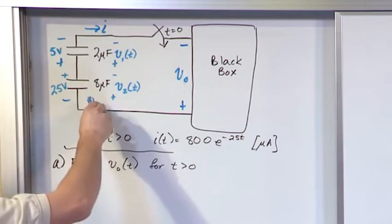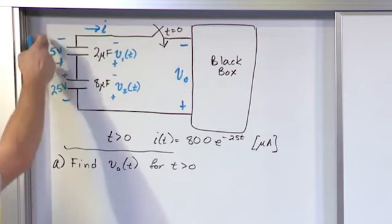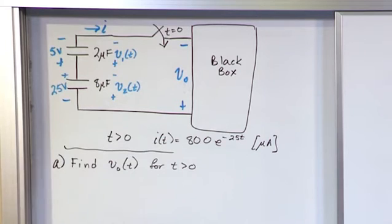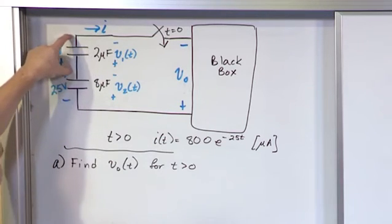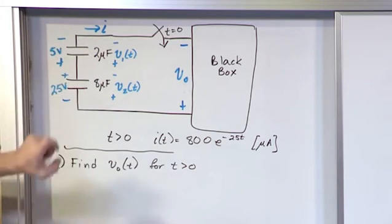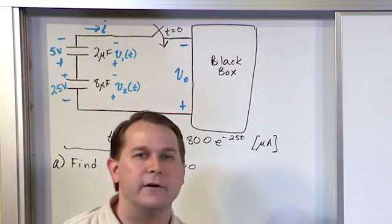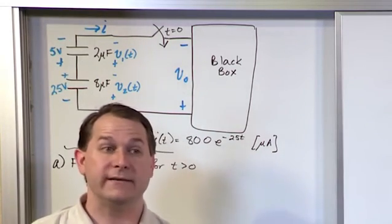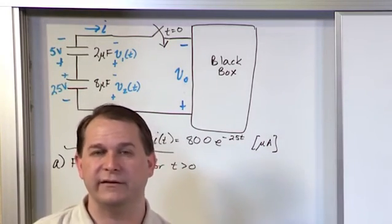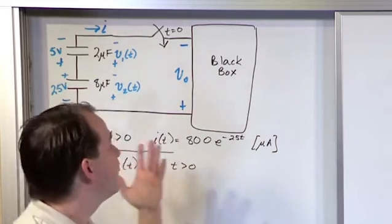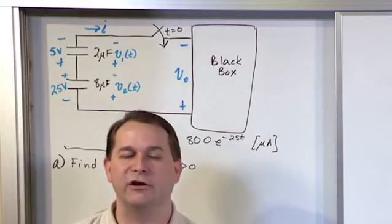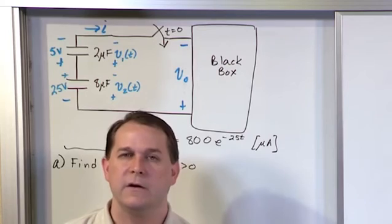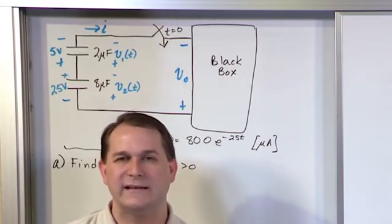...and we also know the current going through this capacitor, and the initial conditions, we could integrate and find V of t across each capacitor and add them together. That's fine. But you have to do two sets of integrations because to find the voltage across a capacitor, you have to integrate the current flowing through it. I would really rather not do that twice unless I really have to.